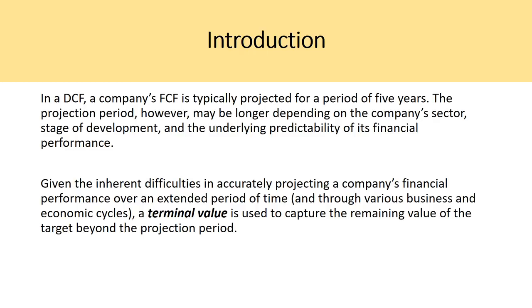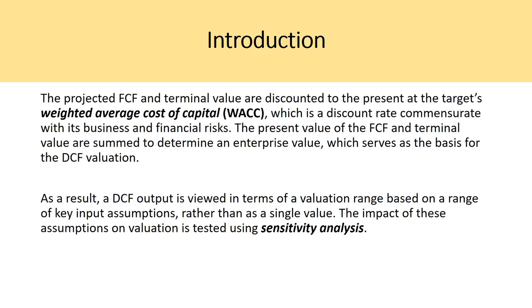In a DCF, a company's free cash flow is typically projected for a period of five years, though the projection period may be longer depending on the company's sector, stage of development, and the underlying predictability of its financial performance. Given the inherent difficulties in accurately projecting financial performance over an extended period, a terminal value is used to capture the remaining value beyond the projection period. Two-thirds of the overall DCF valuation originates from the terminal value, not the explicit forecast period.